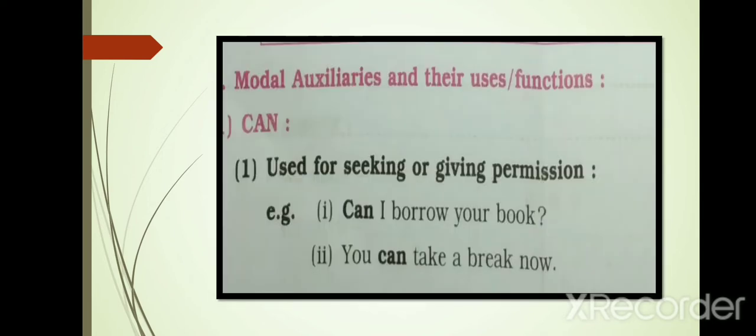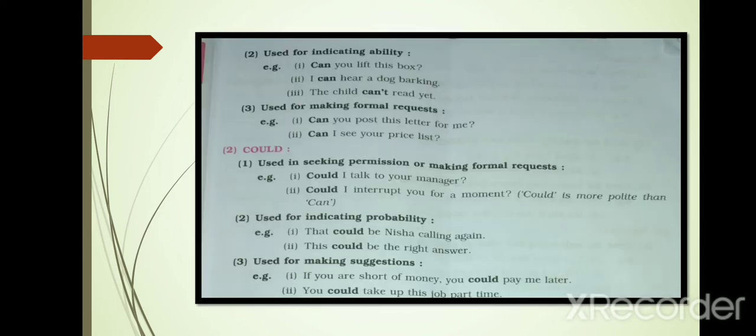Modal auxiliaries and their uses. Can is used for seeking or giving permission. Example: Can I borrow your book? You can take a break now. Can is used for indicating ability. Example: Can you lift this box? I can hear a dog barking.